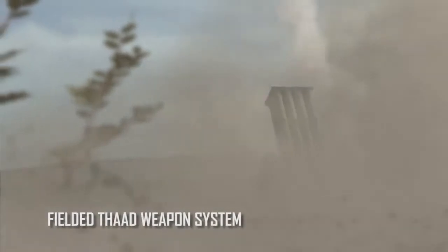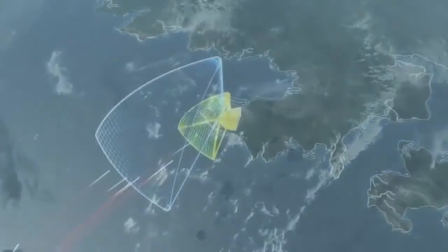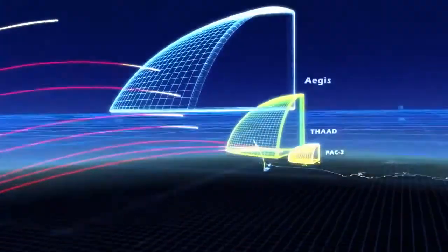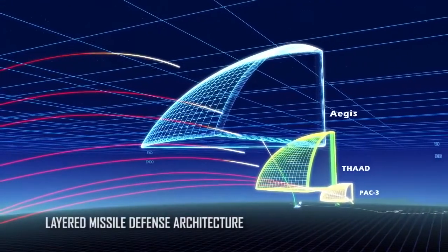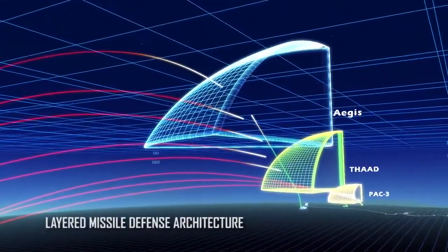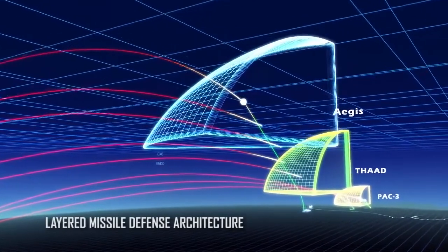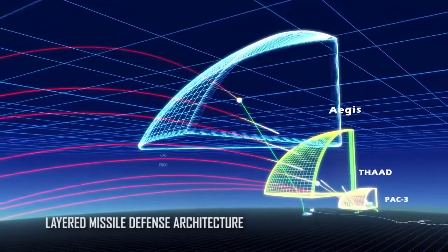The THAAD weapons system is a key element in our layered ballistic missile defense architecture, filling the gap at the mid to high endo-atmospheric regions not covered by the lower tier Patriot PAC-3 or the upper tier Aegis SM-3 class.